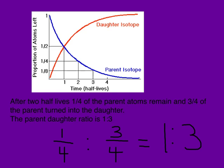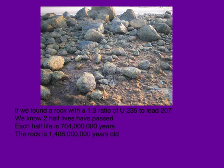That's going to be very helpful when we go out and measure what's happened in the rocks. If we went out into the field and found a rock, and we measured the amount of uranium-235 and the amount of lead-207 in that rock, and found a ratio of one to three, we would know that two half-lives have passed. We know that the half-life of uranium-235 is 704 million years, so since two half-lives have taken place, we know that that rock is 1,408,000,000 years old. That's how scientists find the absolute age of a rock.